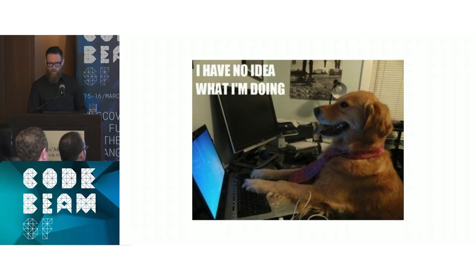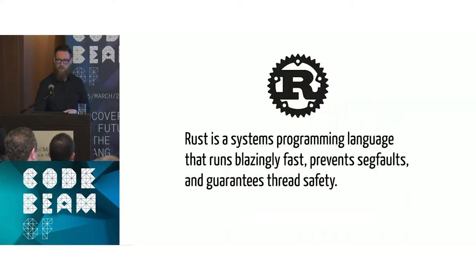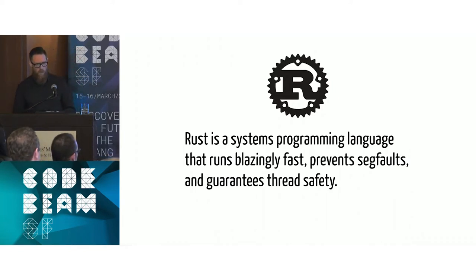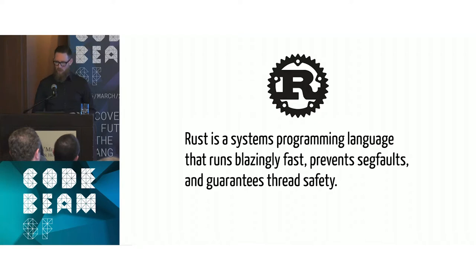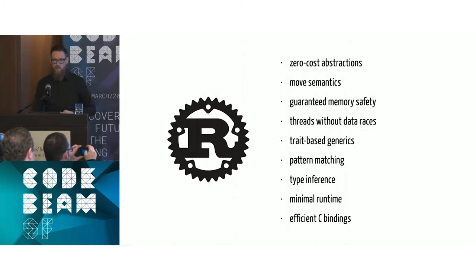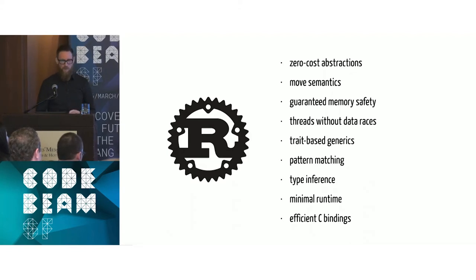When I was learning about NIFs I was also learning about this really cool programming language called Rust. Rust is a systems programming language developed by Mozilla. It runs blazingly fast, prevents segfaults, and guarantees thread safety. It has zero-cost abstractions, traits, guarantees memory safety and no race conditions, and also has FFI bindings — which is exactly what we need to interact with the BEAM.